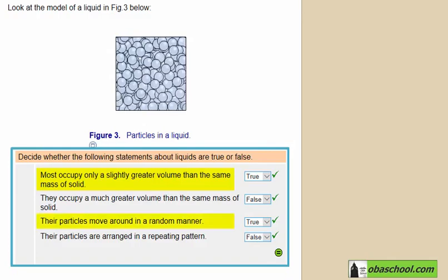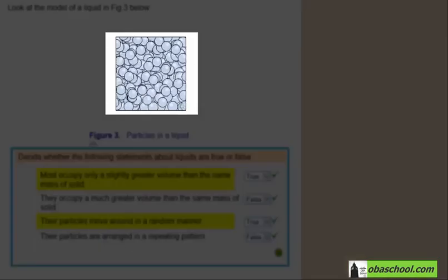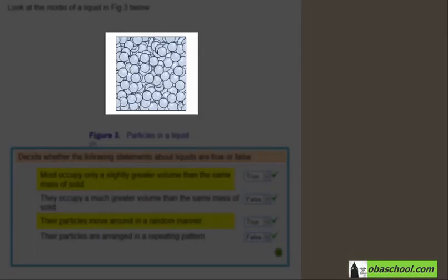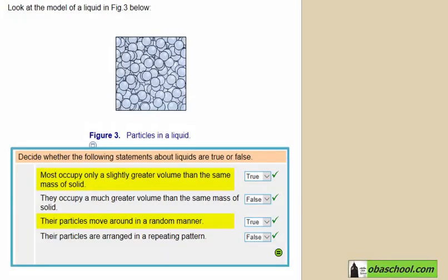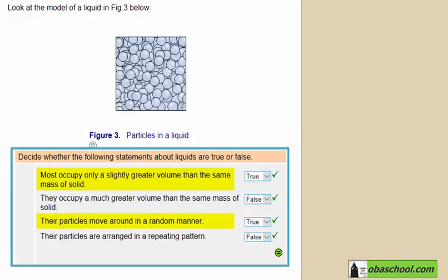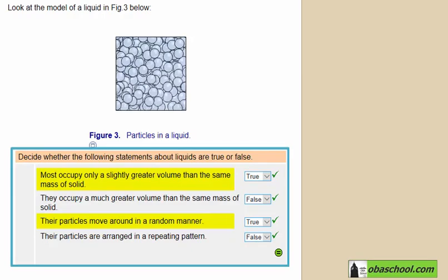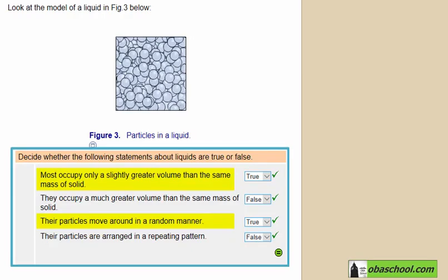And the particles will move around in a random manner. So, as we can observe in this model, they are not moving in a repeating manner. Instead, they will move in a random manner and they will still be close to each other. But, of course, the spacing now between the particles is greater than that of a solid.